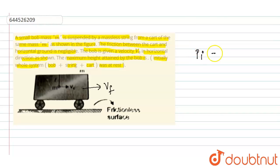Now applying momentum conservation, that is p initial equal to p final. Now initially only bob has velocity, so I can write mass into velocity, that is v naught, equal to final momentum, that is mass of bob plus mass of cart into vf.